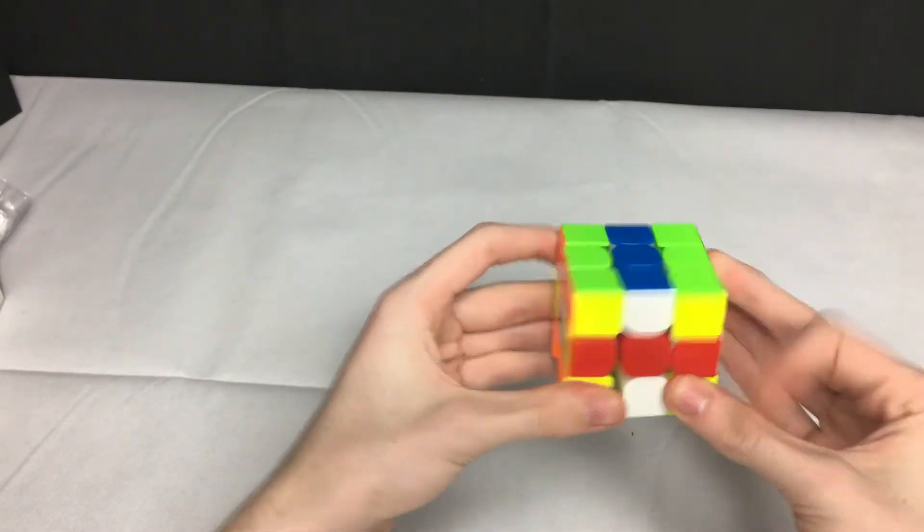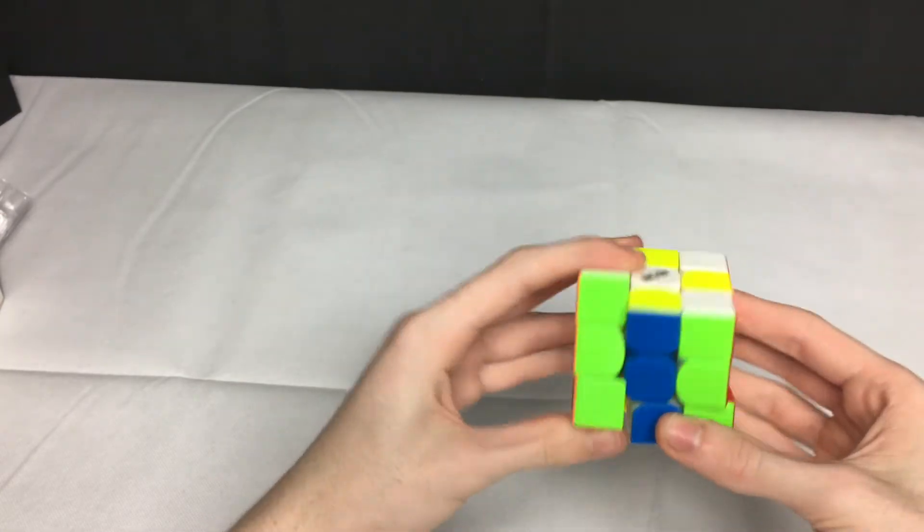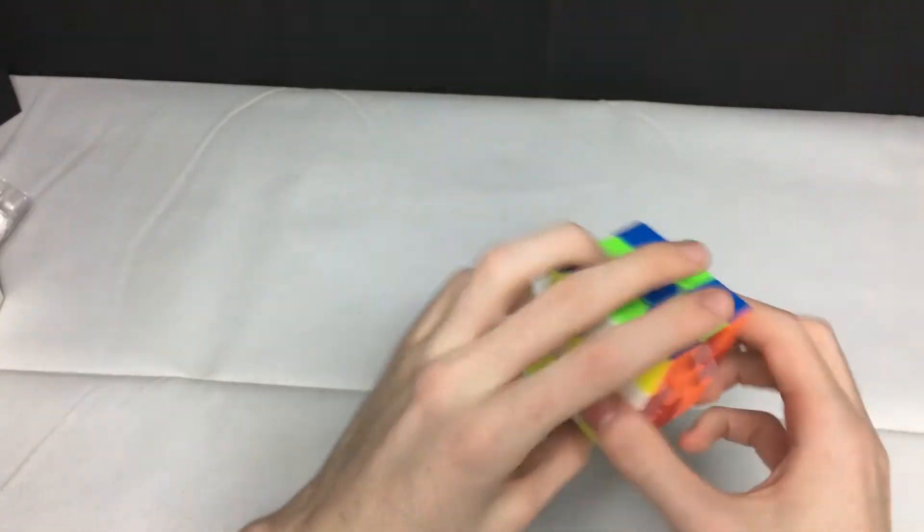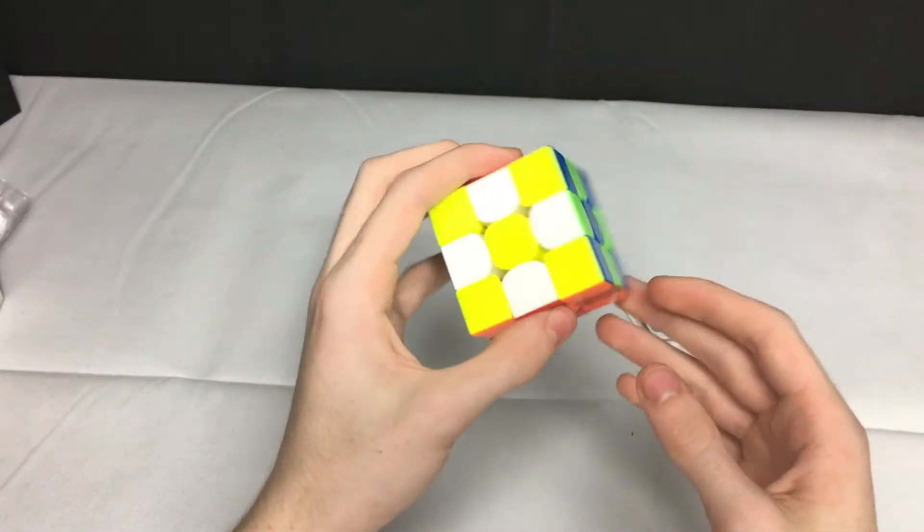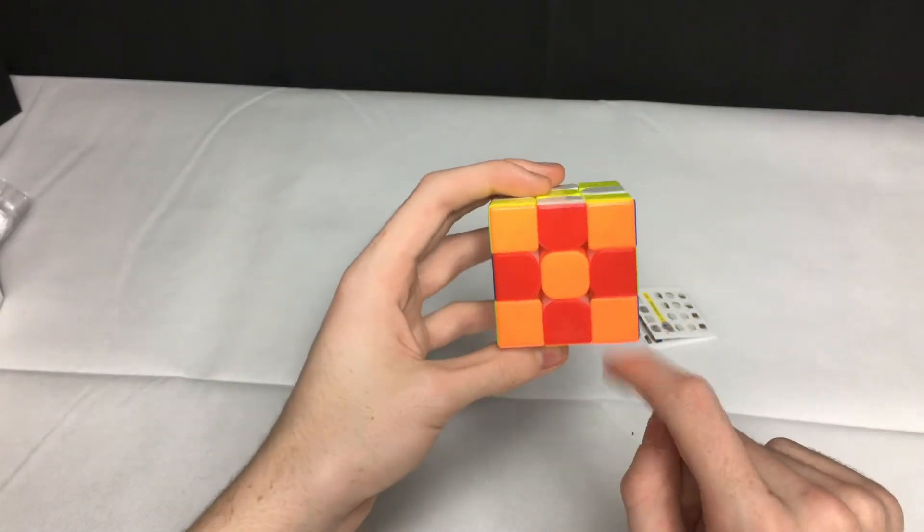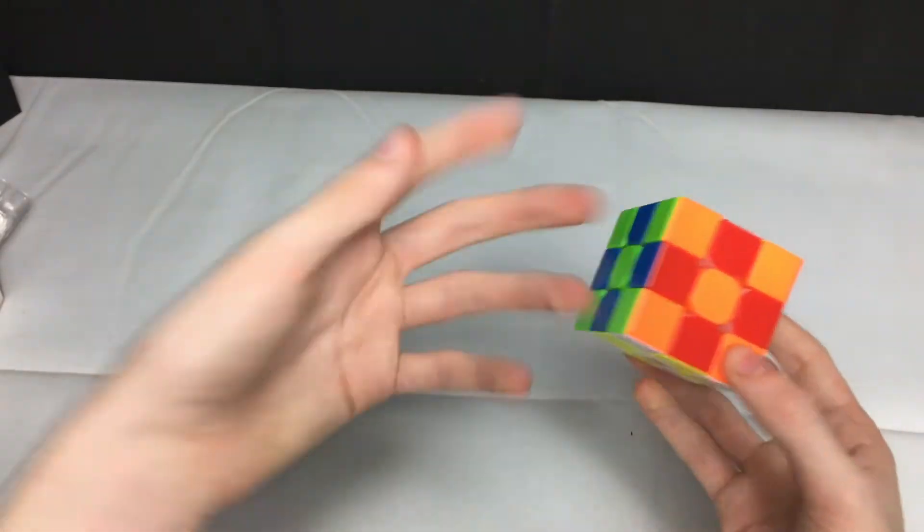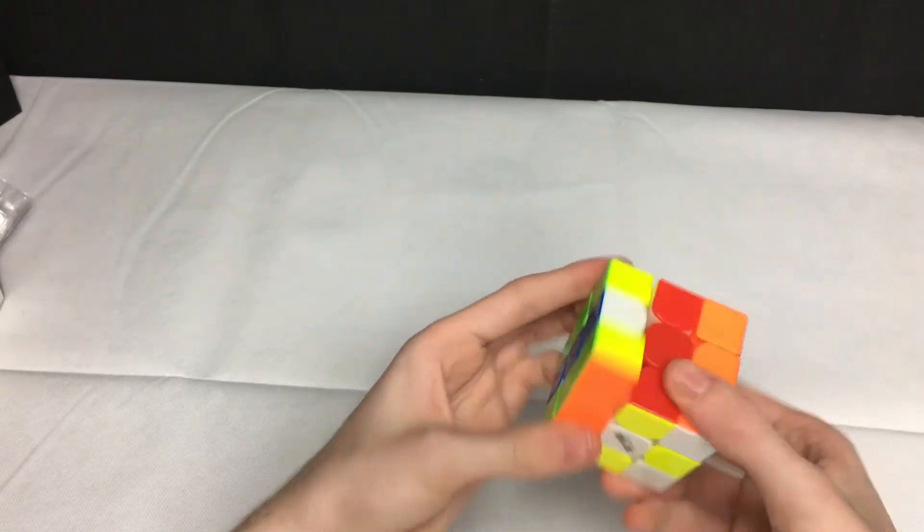So let's go ahead and see if I can do a checker pattern here. Okay, yeah, so colors definitely do stick out. The orange and the red do look kind of similar on camera, but they are quite different in person.